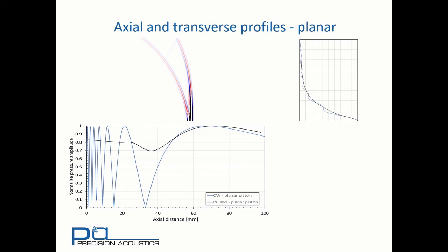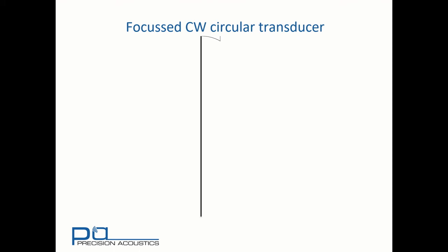With short signals, we get far less interaction. Now let's look at what happens with a focus transducer. The radius is the same as we've used previously, 10 mm, and we have a geometric focus of 20 mm. The centre frequency remains the same as well.